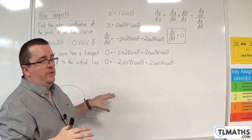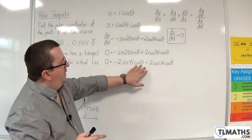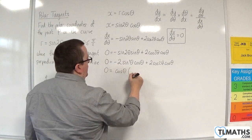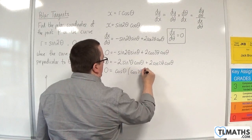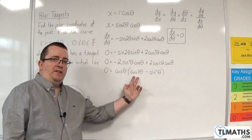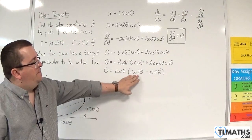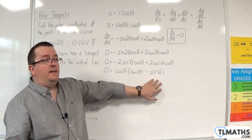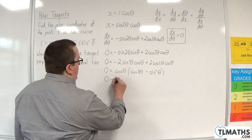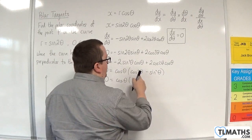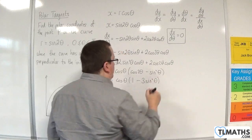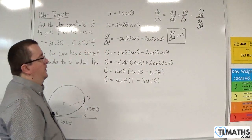We can divide through by 2 and factor out cosθ, giving 0 = cosθ(cos2θ − sin²θ). Now applying the double angle formula cos2θ = 1 − 2sin²θ (chosen because we already have sin²θ to collect like terms): 0 = cosθ(1 − 2sin²θ − sin²θ), which simplifies to 0 = cosθ(1 − 3sin²θ).